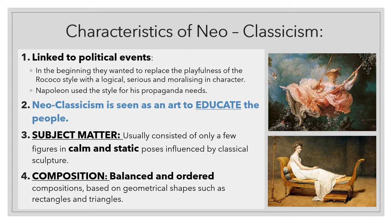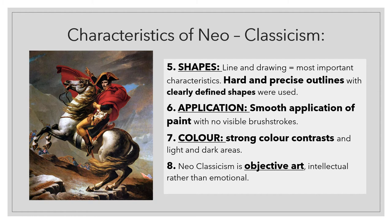Number two: Neoclassicism was there to educate people. Three: the subject matter — figures were very calm and static. Looking at the artwork on the right, the lady sits quite still and elegant; that is what static means, standing still. The composition is very balanced and ordered. Throughout Neoclassic artworks they used a lot of triangles — for example, a triangle starting at the top of the lady's head continuing to the left foot of the couch and then the right foot of the couch as the third point, creating balance.